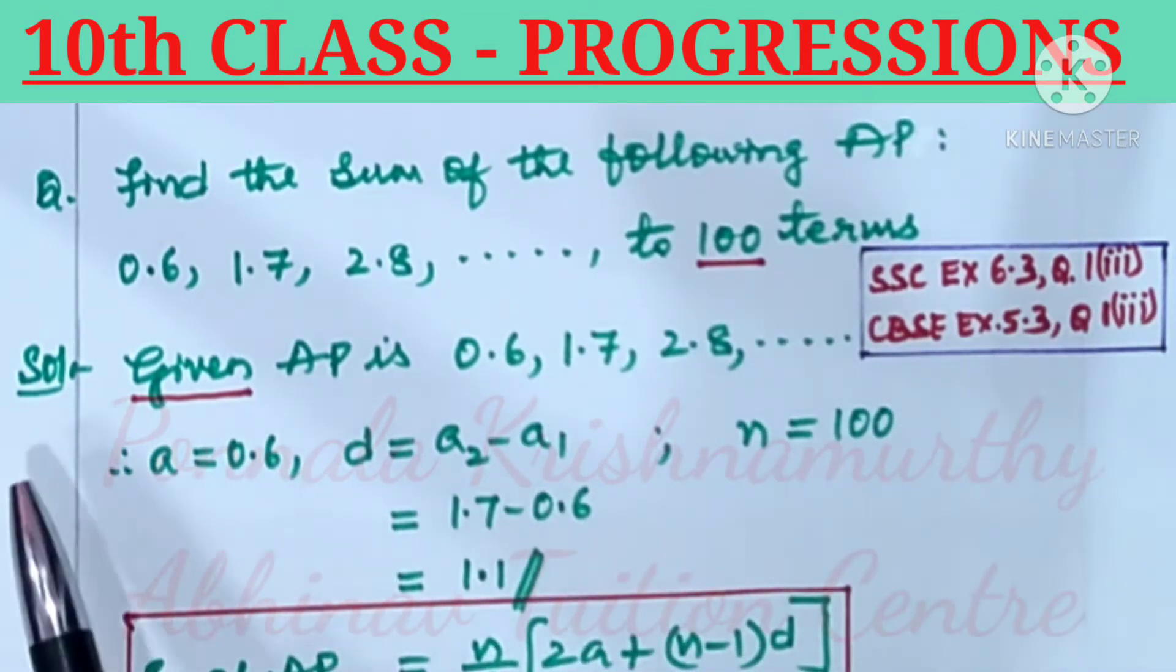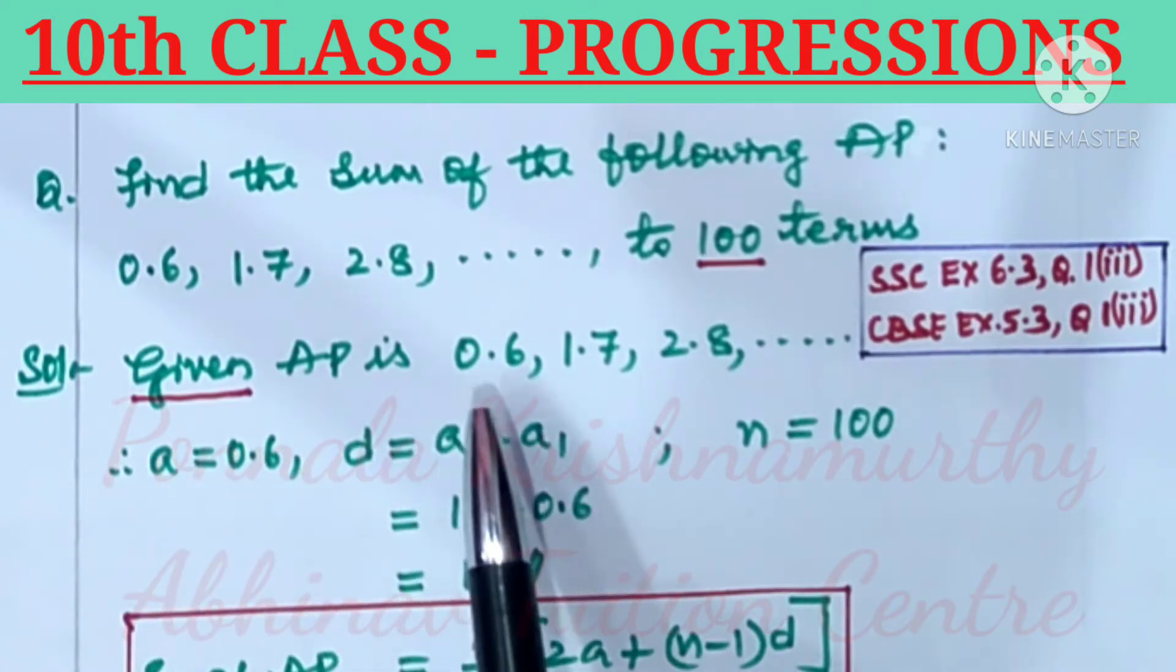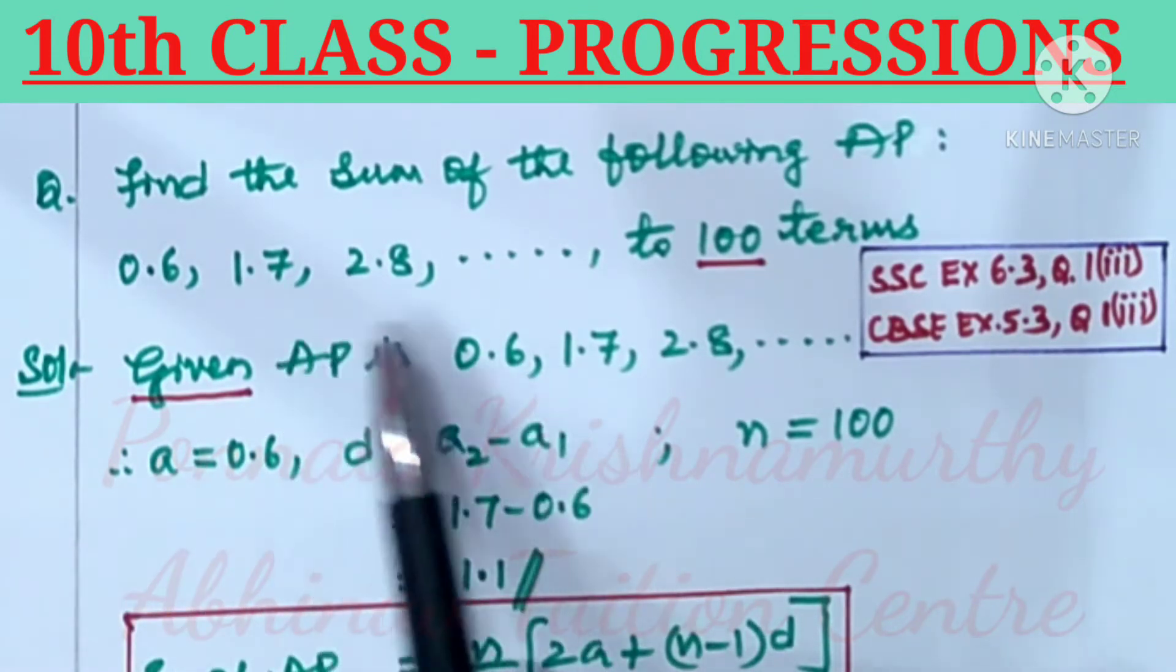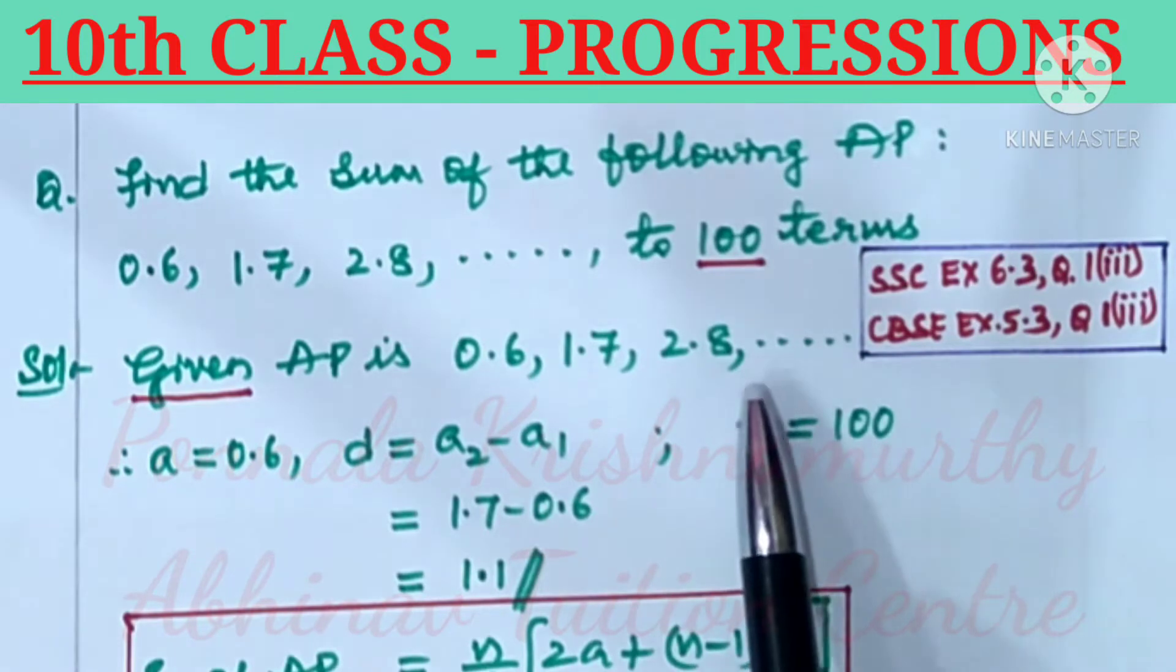References here. Solution: given AP is 0.6, 1.7, 2.8, and so on.